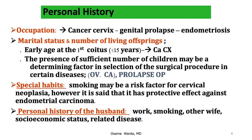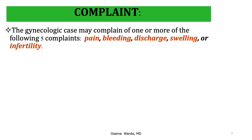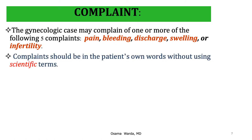Personal history of the husband is important because his work reflects the socioeconomic status of the couple. A smoking husband may affect his spouse negatively as she may be a passive smoker inhaling exhaled smoke. The gynecologic patient may complain of one or more of the following five complaints: pain, bleeding, discharge, swelling, or infertility. Complaints should be recorded in the patient's own words without using scientific terms.